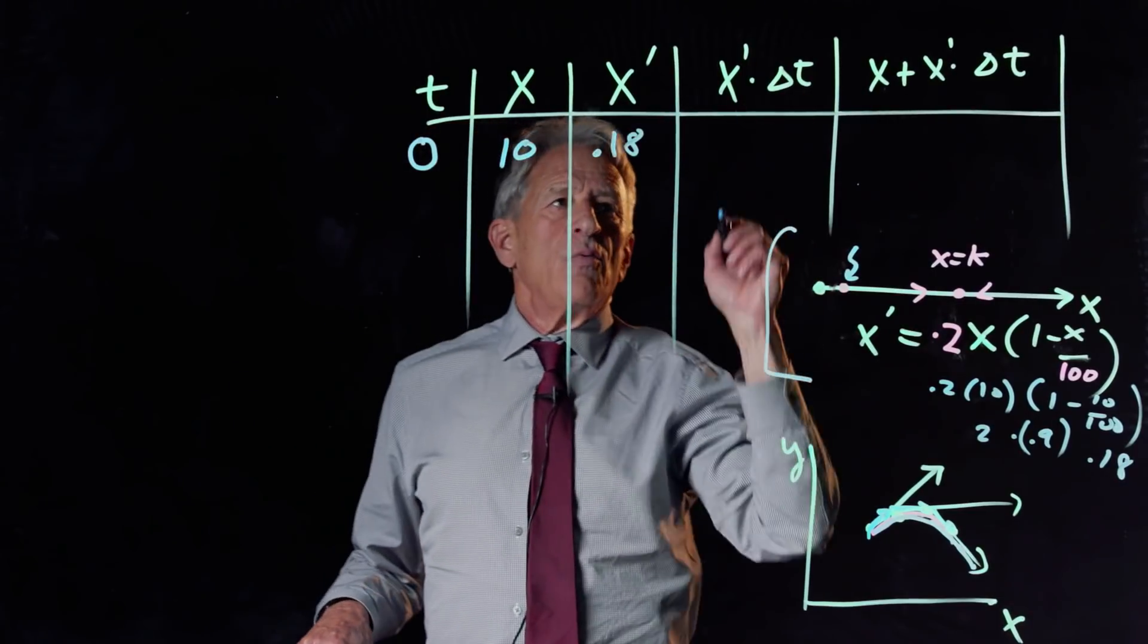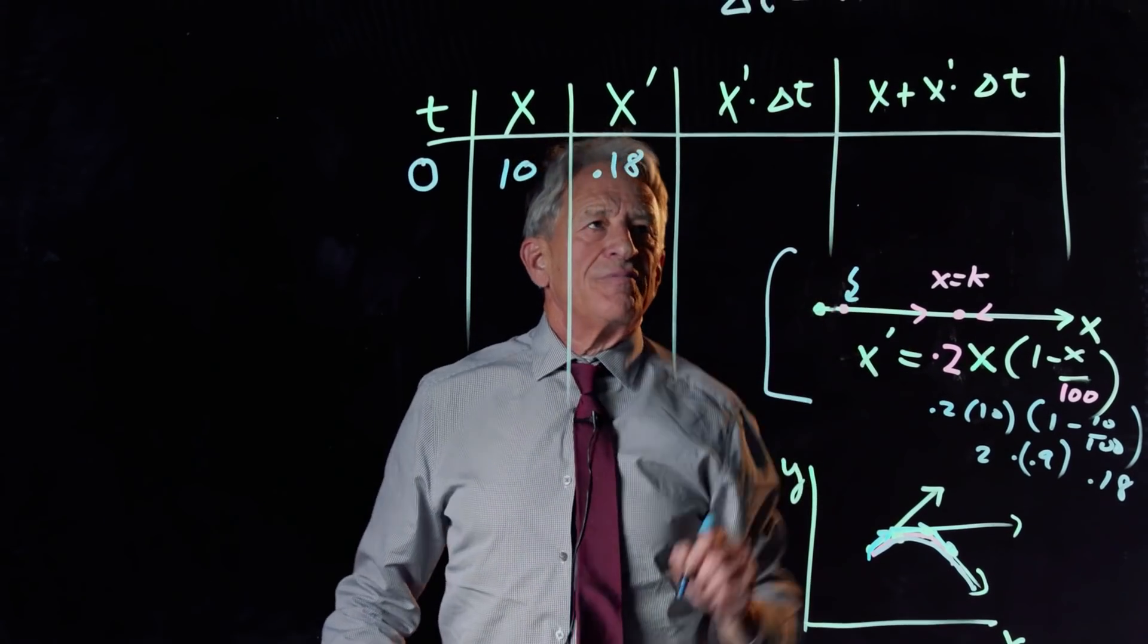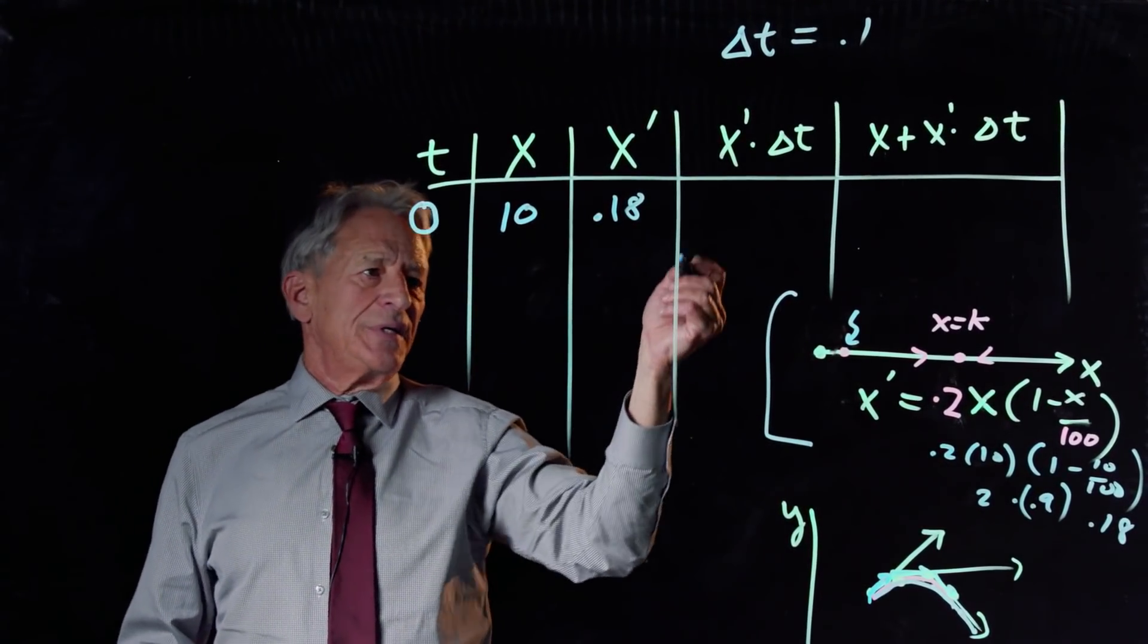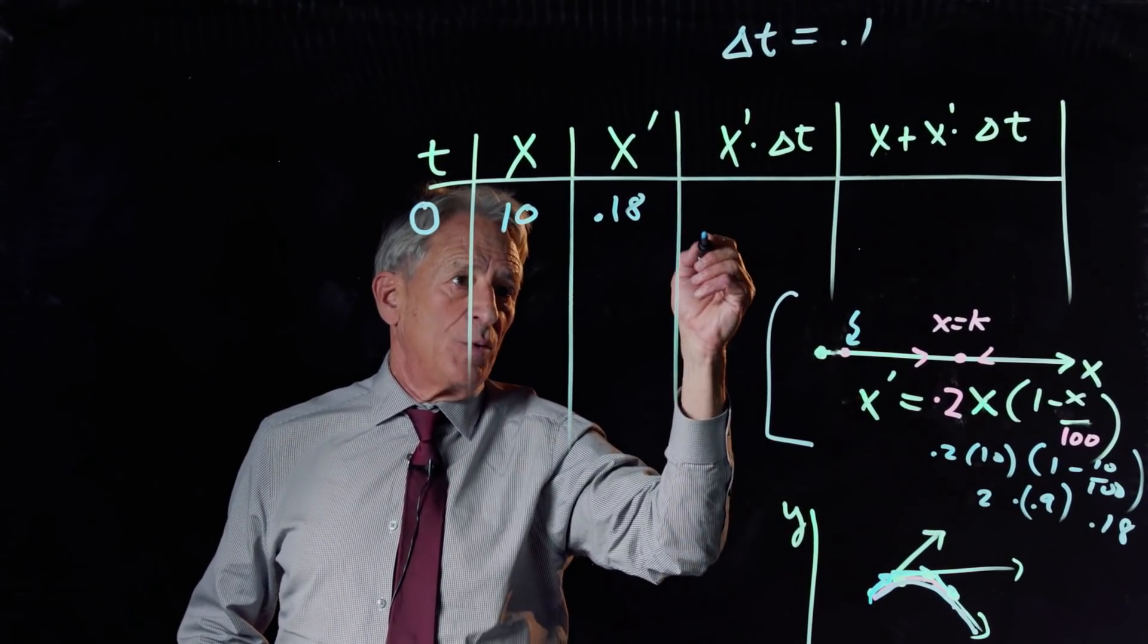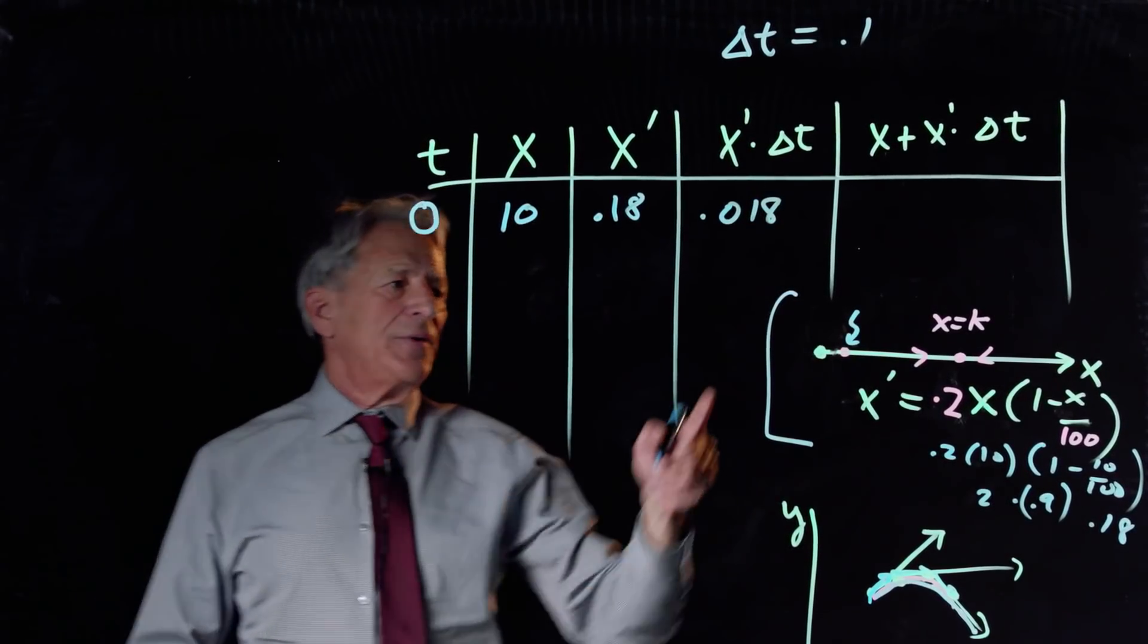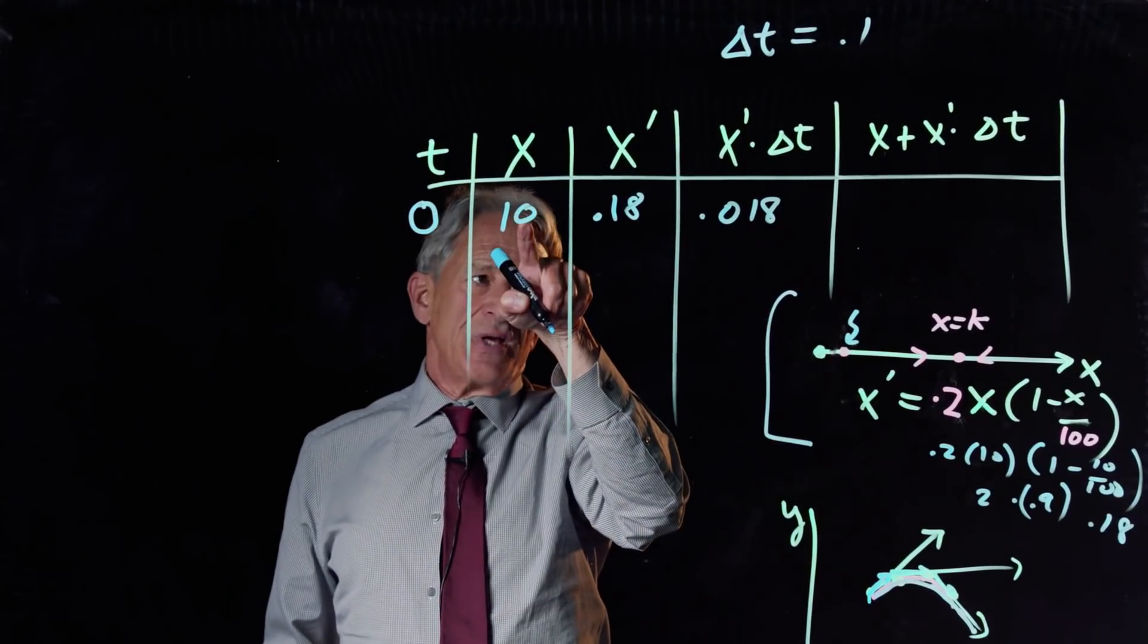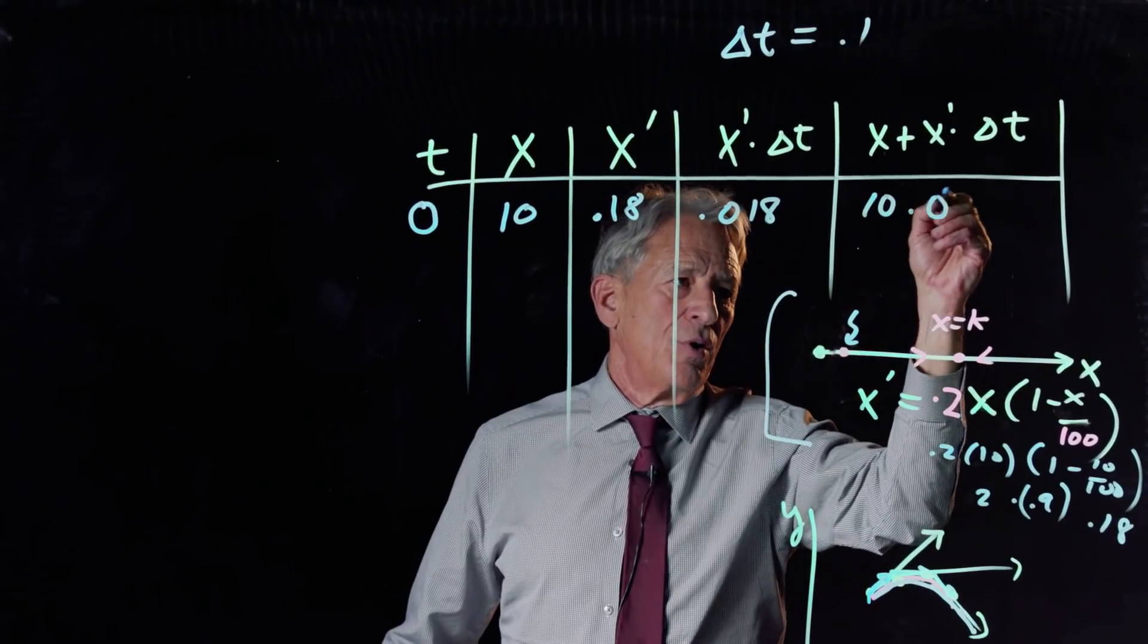Now, we have to choose a delta T. And I'm going to choose a delta T of 0.1. So, now X prime for this point times delta T becomes 0.18 times 0.1 or 0.018. And now the new value, which is X plus X prime times delta T is 10 plus 0.018 or 10.018.